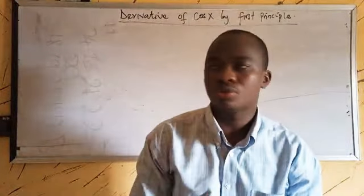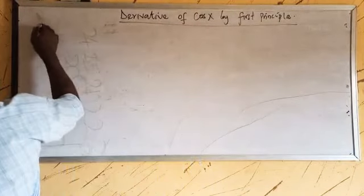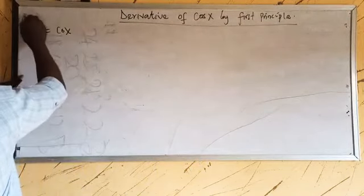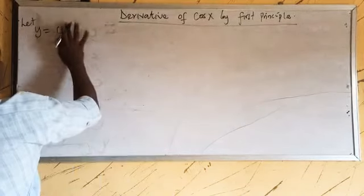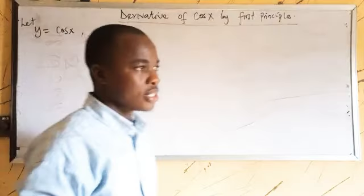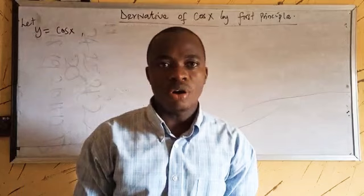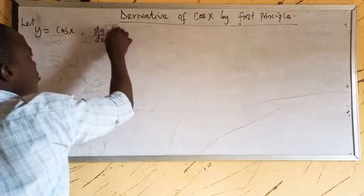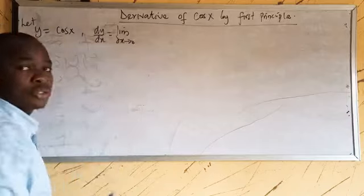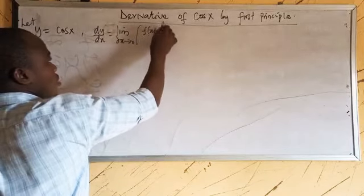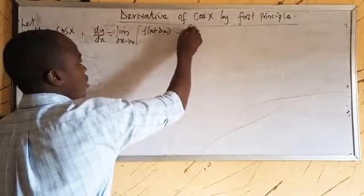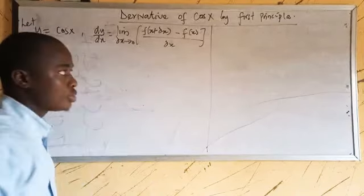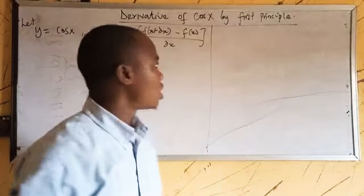Now if you want to solve this, we follow the first principle. Let y equal cos x. So from the definition of first principle, we have dy/dx equals the limit as Δx tends to zero of f(x + Δx) minus f(x), all over Δx. This is the first principle definition.